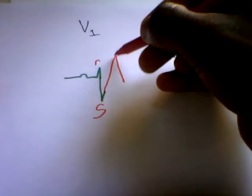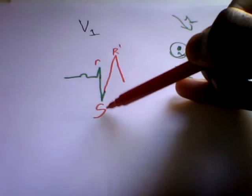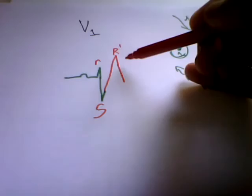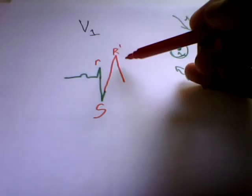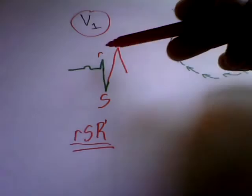Therefore we get this well-known pattern: R, S, and because this is another R wave we call it R prime. So this is in lower case because it's of low amplitude, this is a deep S wave therefore a capital letter, this is a high R wave therefore a capital letter. In lead V1 in right bundle branch block you look for RSR prime pattern. And I hope you understand how this pattern arises.